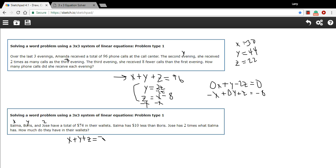And then let's see. It says Salma has 10 less than Boris. So Salma's X. So she is Boris, which is Y, minus 10. And Jose has two times what Salma has. So Jose is Z. So Jose equals Salma, who's X times 2.